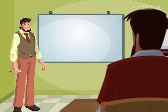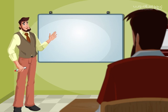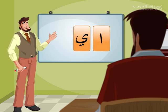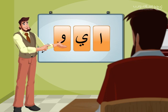Today we're going to learn a new lesson about how to pronounce and write the Mad letters, which are three types: Mad Alif, Mad Ya, and Mad Waw. We should notice that when you pronounce the Mad, it takes double the actual time of the pronunciation of the short vowel.